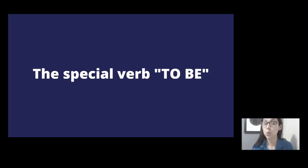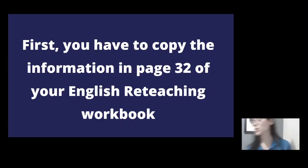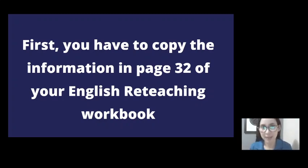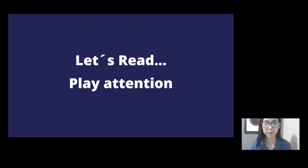This is a new topic from your English Reteaching Workbook. First, you have to copy the information on page 32 of your English Reteaching Workbook. Take it out now. Copy the information, read it, and pay super attention. Let's read together — one, two, three, go: 'The special verb be does not show action. It tells what someone or something is or is like. Use the form of the verb be that agrees with the subject of the sentence.'